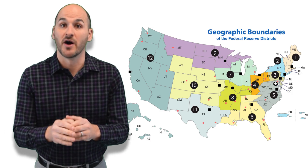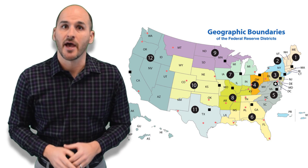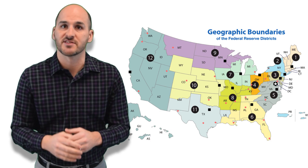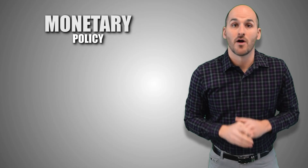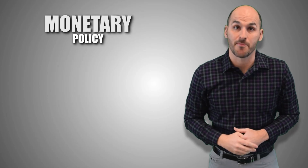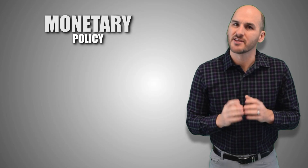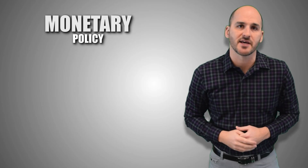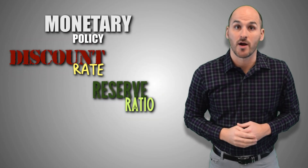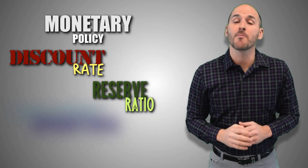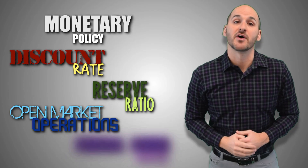They distribute funds, inspect the health of banks and their districts, and hold funds for private sector banks. The Federal Reserve has four monetary policy options at its disposal to help stabilize the economy: the discount rate, the reserve requirement, open market operations, and the federal funds rate.